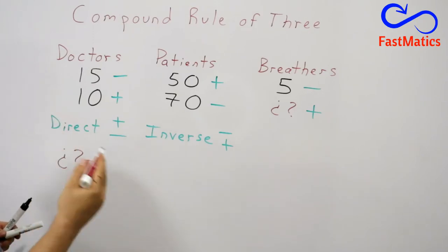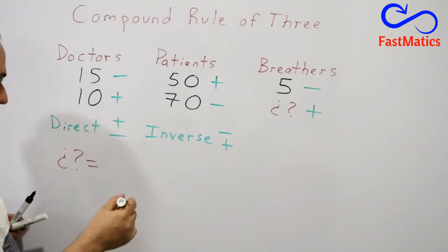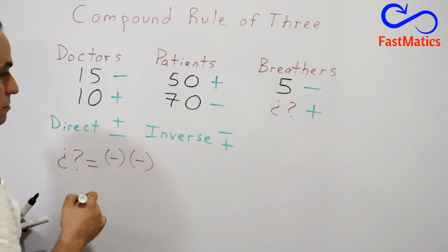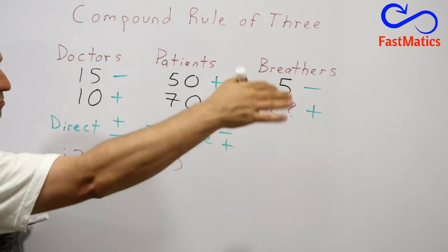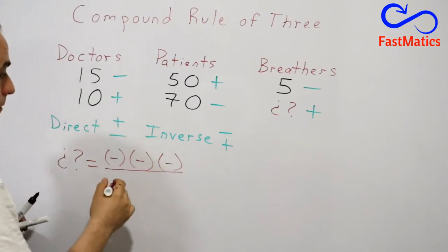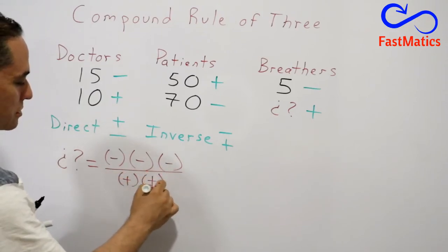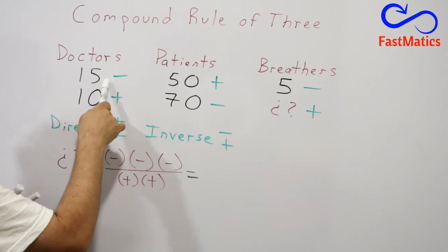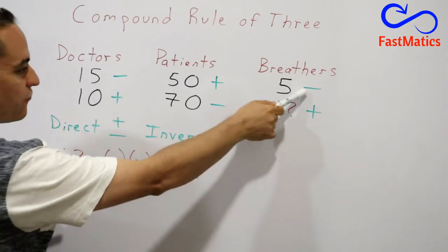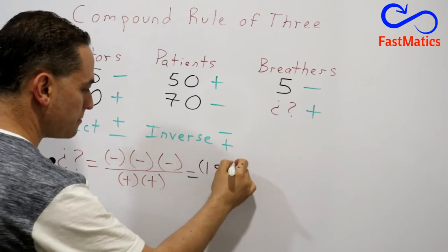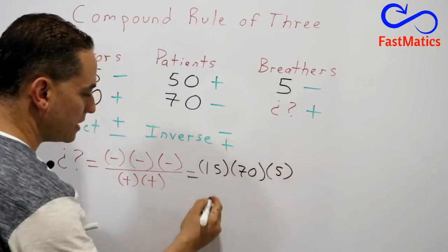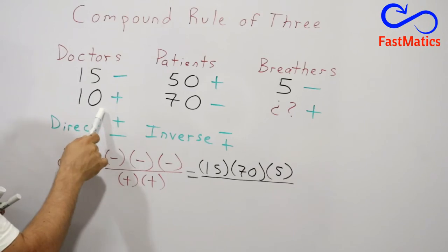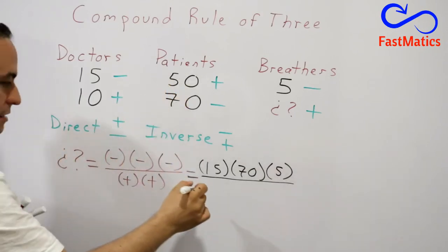Now remember the formula. Always, always, always: minus times minus times minus times minus, etc., divided by plus times plus times plus, etc. Here we have 15, 70, and 5. 15 times 70 times 5, and then we are going to have the plus: 10 times 50. And that's it.